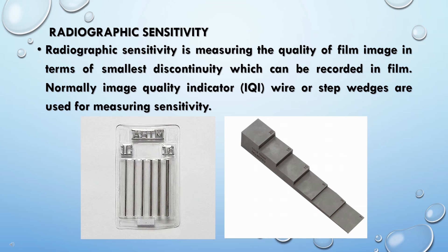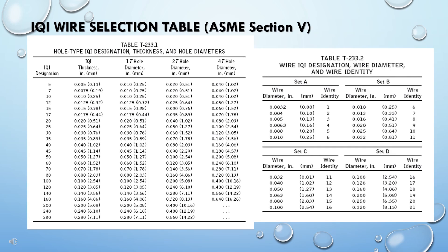Radiographic sensitivity measures the quality of a film image in terms of the smallest discontinuity that can be recorded. Image quality indicators (IQI) — such as wire or step wedge types — are used for measuring sensitivity. IQI wire selection is referenced in the ASME Section 5 table.